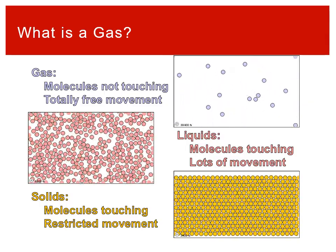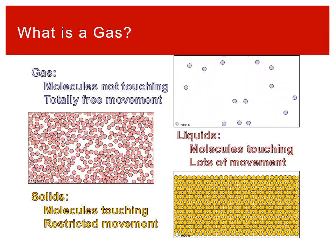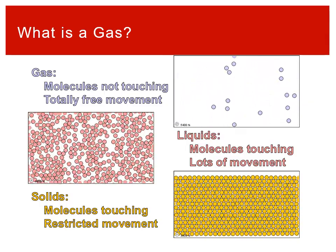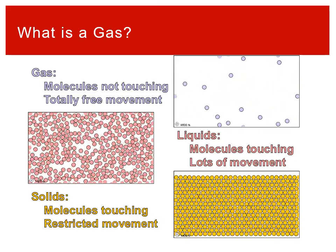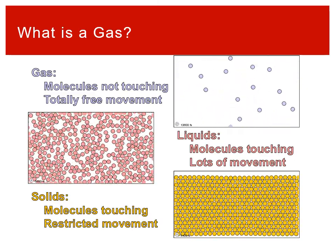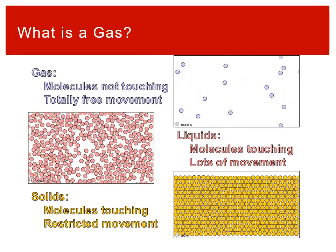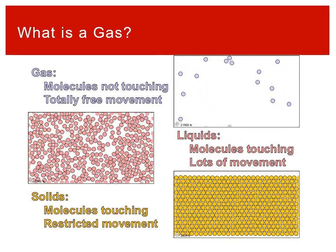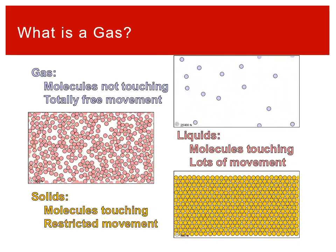In gases, the molecules are fully far apart — not touching at all, just kind of floating around freely. So in a gas, it is mostly nothingness in between the atoms or molecules, whatever is making up the gas.